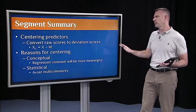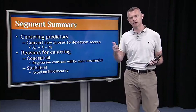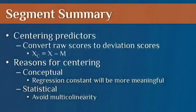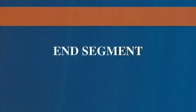So to sum up this segment, centering predictors is real easy. Just take your raw scores, put them in deviation form. Real simple, just create a new column in your data frame in R. The reasons for centering: mainly conceptual, it's going to help us interpret the regression constant. But also statistical, it allows us to avoid this problem of multicollinearity.